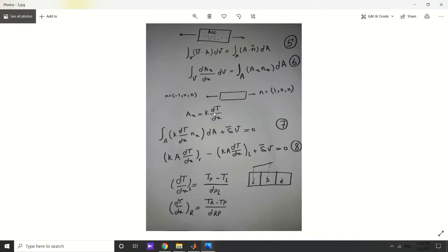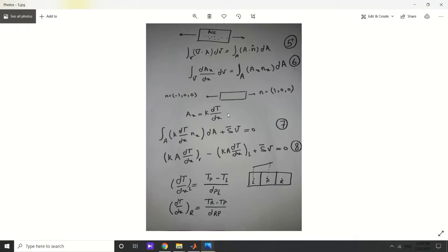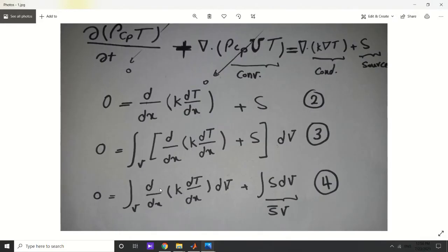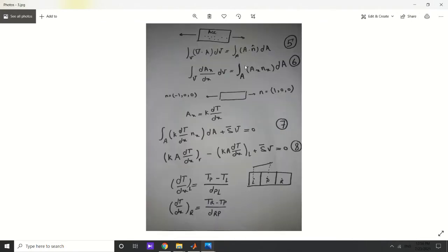By assuming Ax equal to k dT/dx and by looking at the fourth equation, we will see that it is exactly the divergence theorem and can be replaced with the right-hand side of the fifth equation to get this equation.